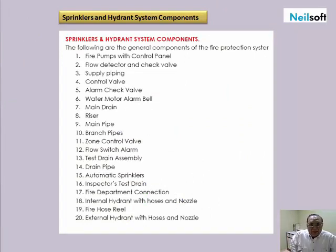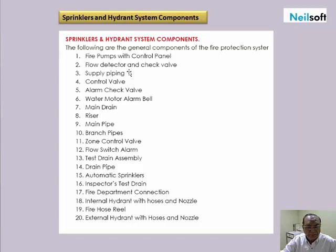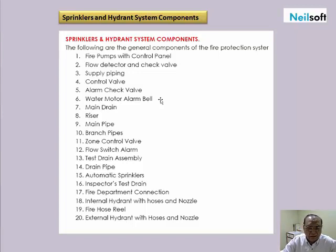What are the components of the sprinkler and hydrant systems? The following are the components: fire pumps with control panel, flow detectors and check valves, supply pipe, control valve, alarm check valve, water motor, alarm bell, main drain risers, etc. You will see the details and pictorial view of all these components in the oncoming slides.